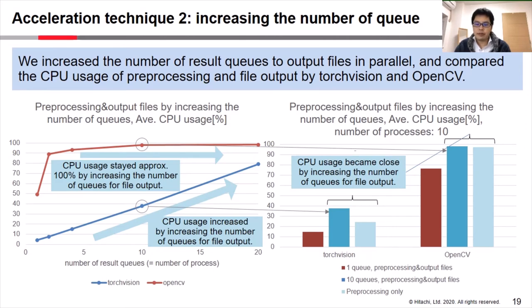These trends appear when we compare the average CPU usage after increasing the number of result queues against preprocessing only. In both cases, CPU usage became close by increasing the number of queues for file output. But in the OpenCV case, when the number of processes is 10, CPU usage reached approximately 100%, implying that even if we increase the number of result queues and processes, we could not fully utilize CPU resources. Thus, we should apply TorchVision in preprocessing when we can increase the number of processes. On the other hand, when the number of processes is limited, we should apply OpenCV.